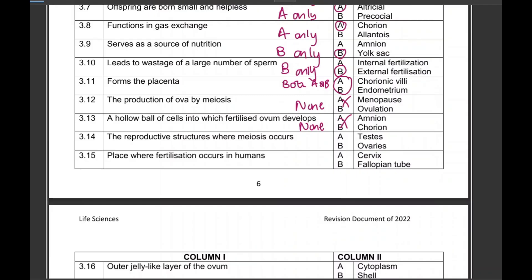'The reproductive structures where meiosis occurs' — testis and ovaries — that is definitely both A and B.